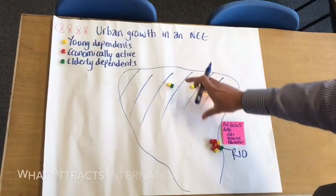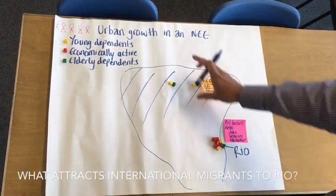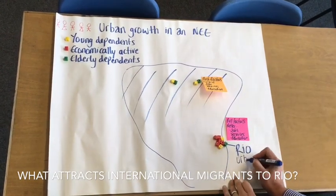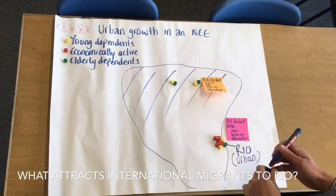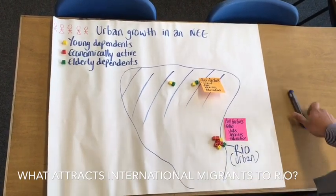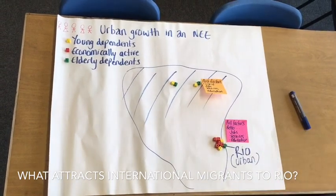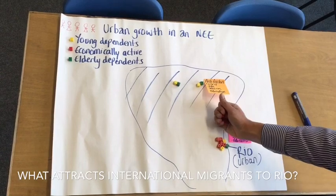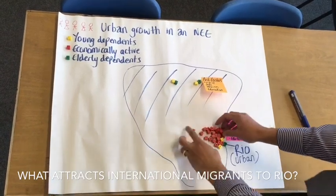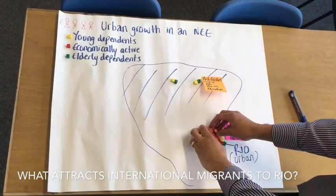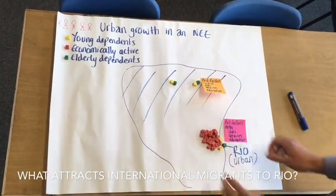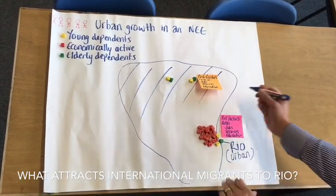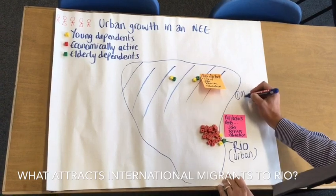We've experienced internal migration — movement within a country from rural areas to Rio, which is urban. Another type of migration is international migration, where economically active people from overseas migrate into an area. So here we've got lots of economically active people in the population and the city has already grown. The first reason for this growth is migration.